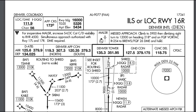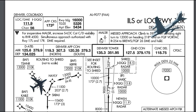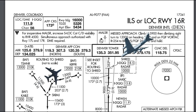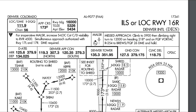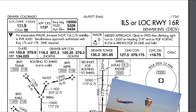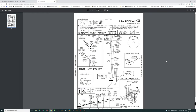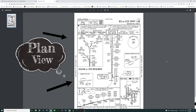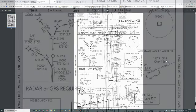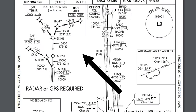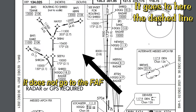Next to that are the approach frequencies. Depending on whether you're coming from north or south will determine which approach controller you contact. To the right of that is the tower for Denver International, and then we have the ground and clearance frequencies to the right of that. Below the briefing strip we get into what's called the plan view. On the plan view, looking over to the left, this gives us all of our initial approach fixes all the way down to the final approach fix.